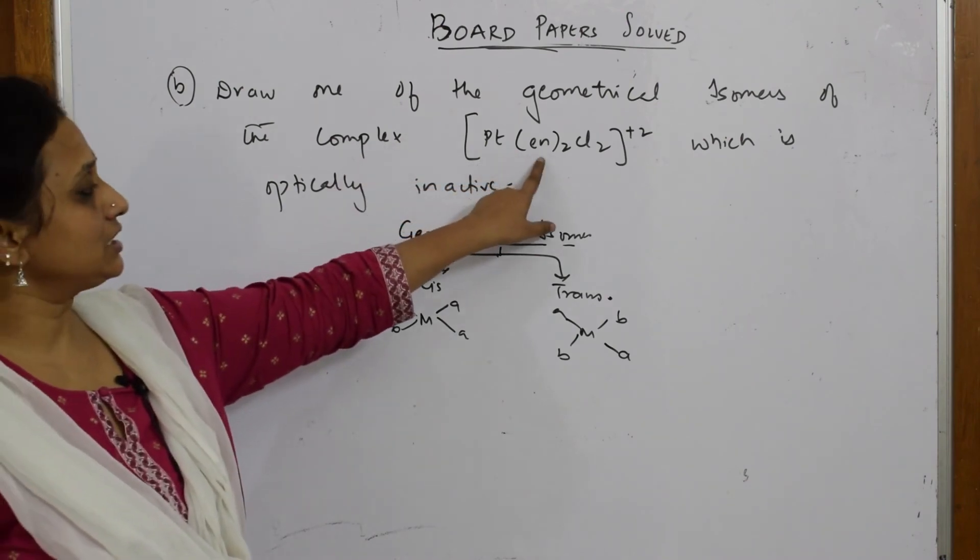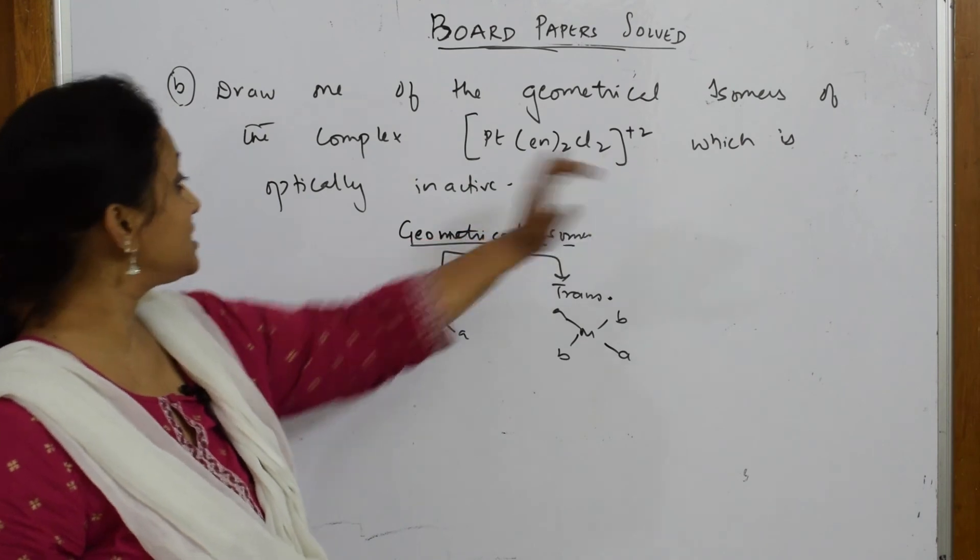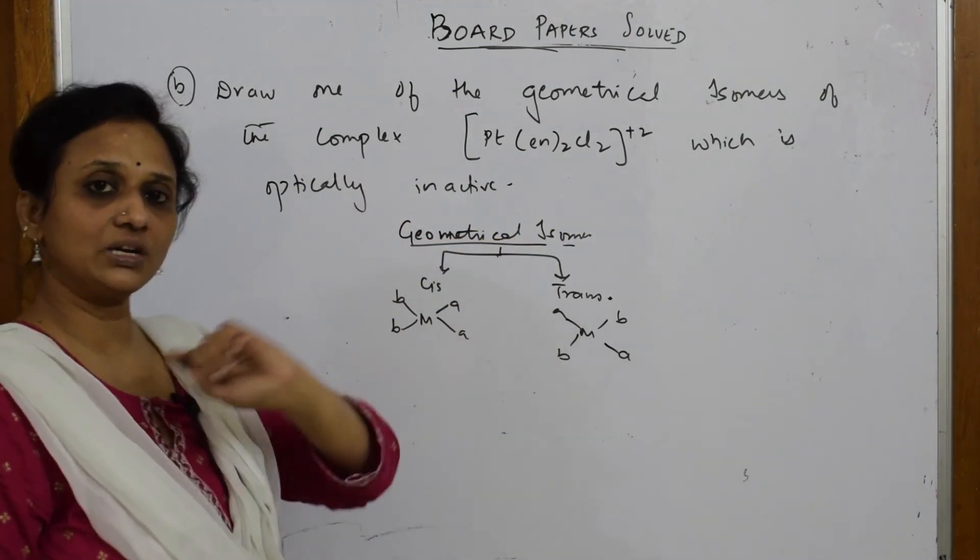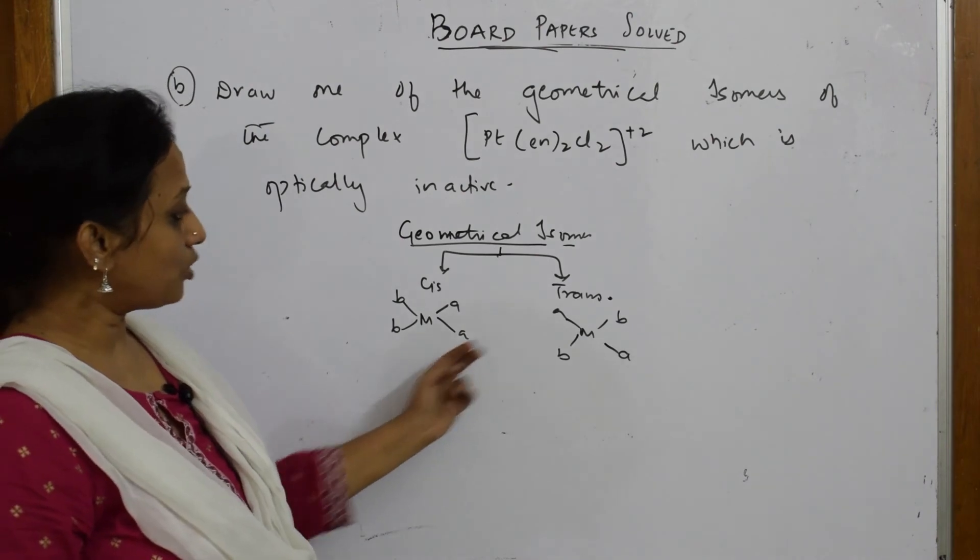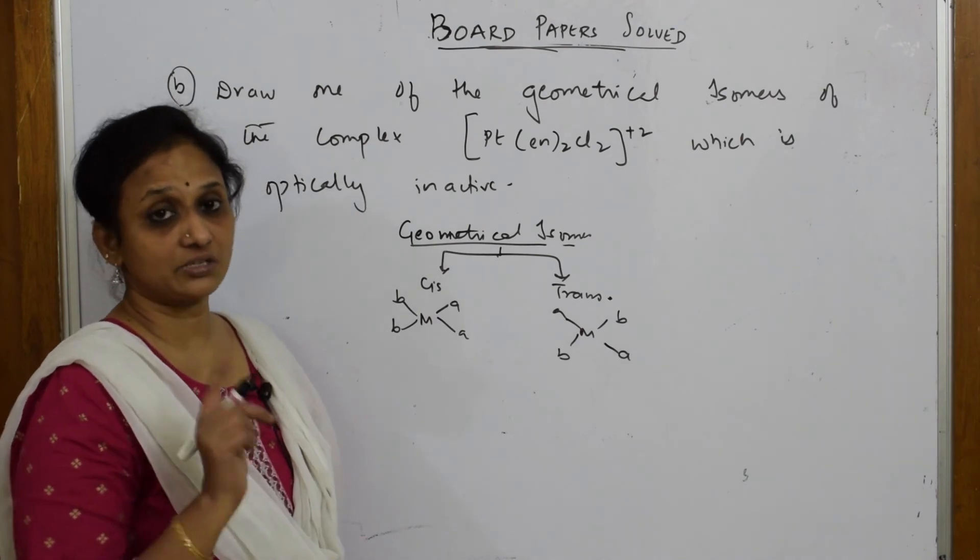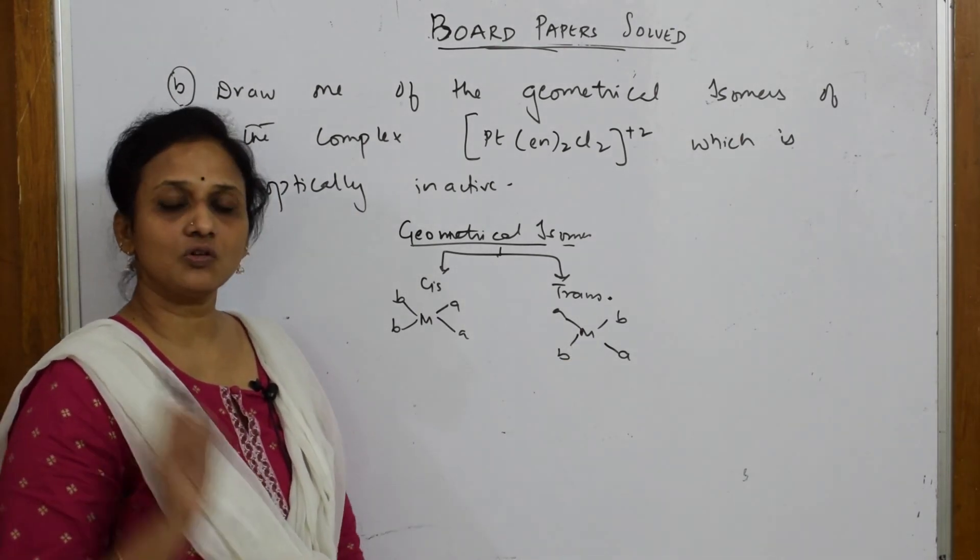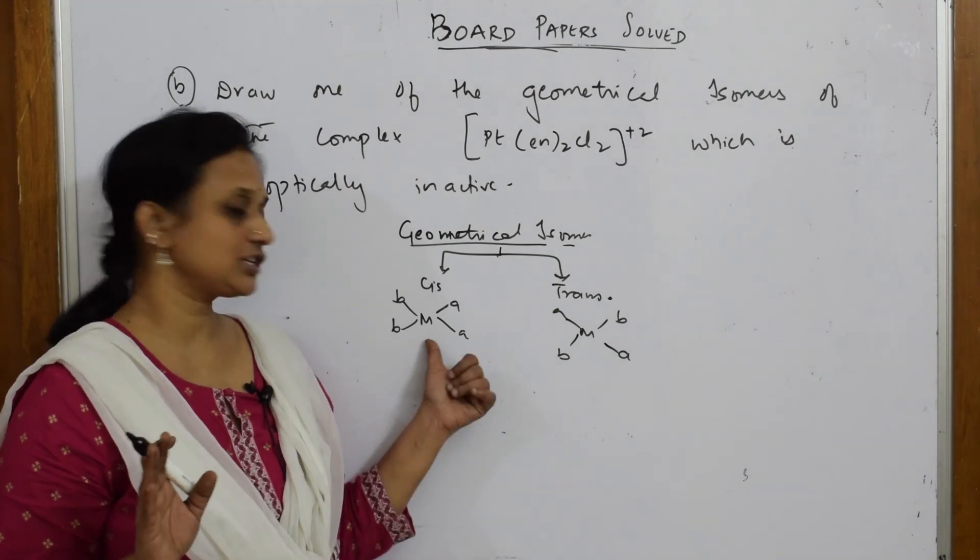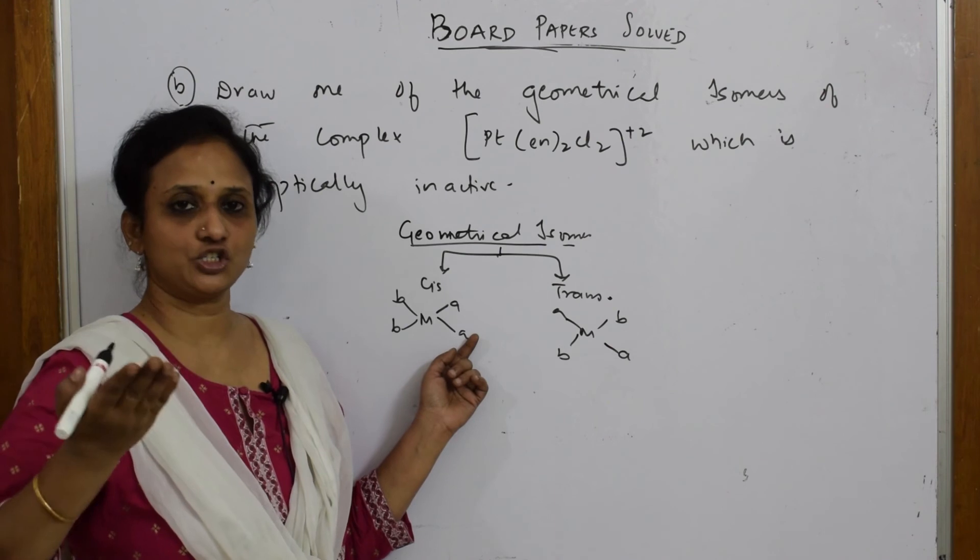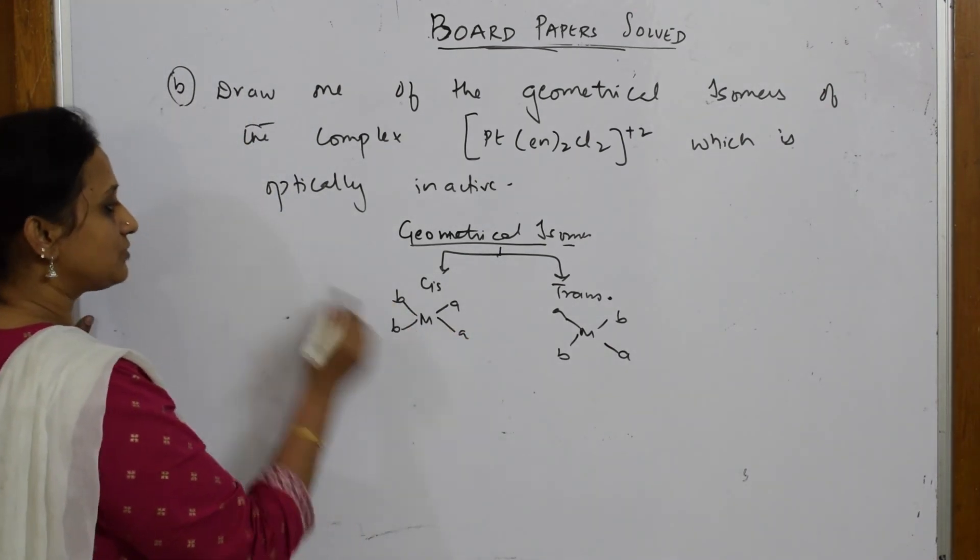They've given me a complex Pt(en)2Cl2²⁺ which is optically inactive. They want me to draw only one complex. Among these two, which is optically inactive? In optical isomerism, the trans isomers are always optically inactive. The cis isomers will rotate plane polarized light and form enantiomers.